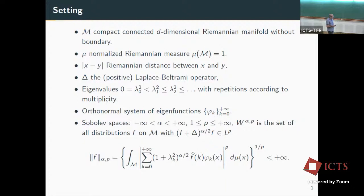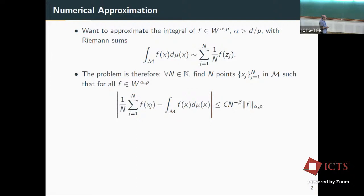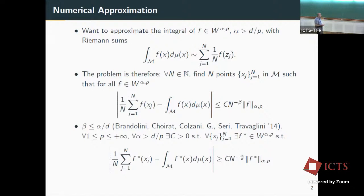The idea is that we want to approximate the integral by means of Riemann sums. The weights can be one over n or something different. We want to find endpoints such that for every function in some Sobolev space, we have control on the error of order n^{-beta}. The first result we saw yesterday was that beta cannot be greater than or equal to alpha over D, because one can find a function demonstrating you cannot have a faster decay than n^{-alpha/D}.